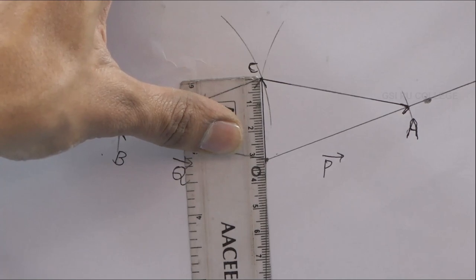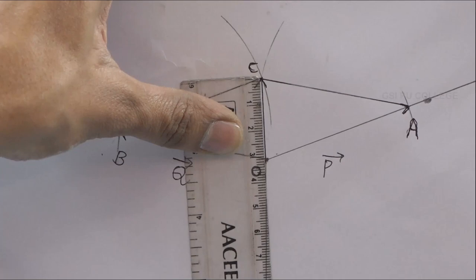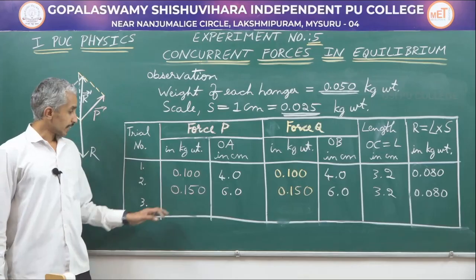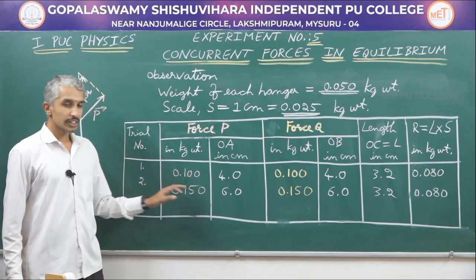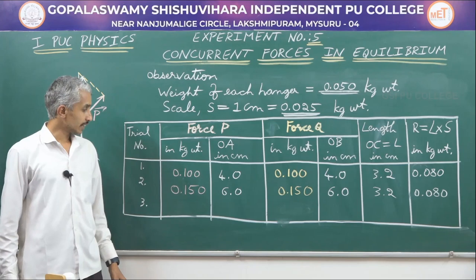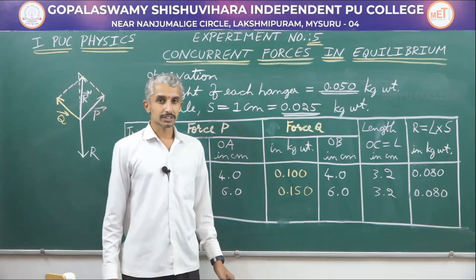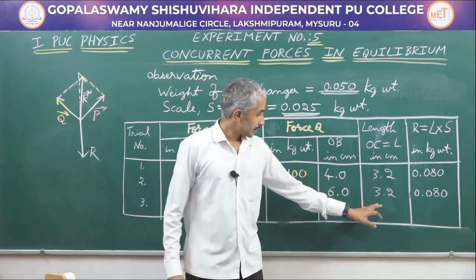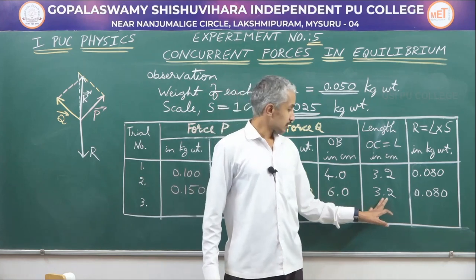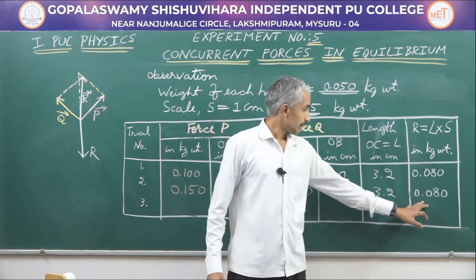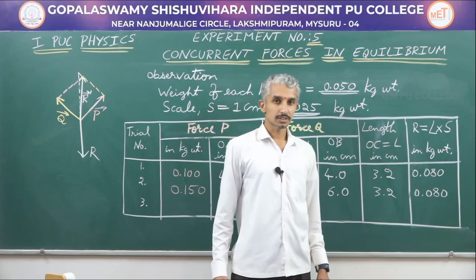This is because the unknown weight of the wooden block does not change. So no matter what the weights on the left and right are, the diagonal will be the same. For the second trial, applying 0.150 kg on both left and right, we traced the parallelogram and again got the diagonal as 3.2 centimeters, giving the unknown weight as 0.080 kg.